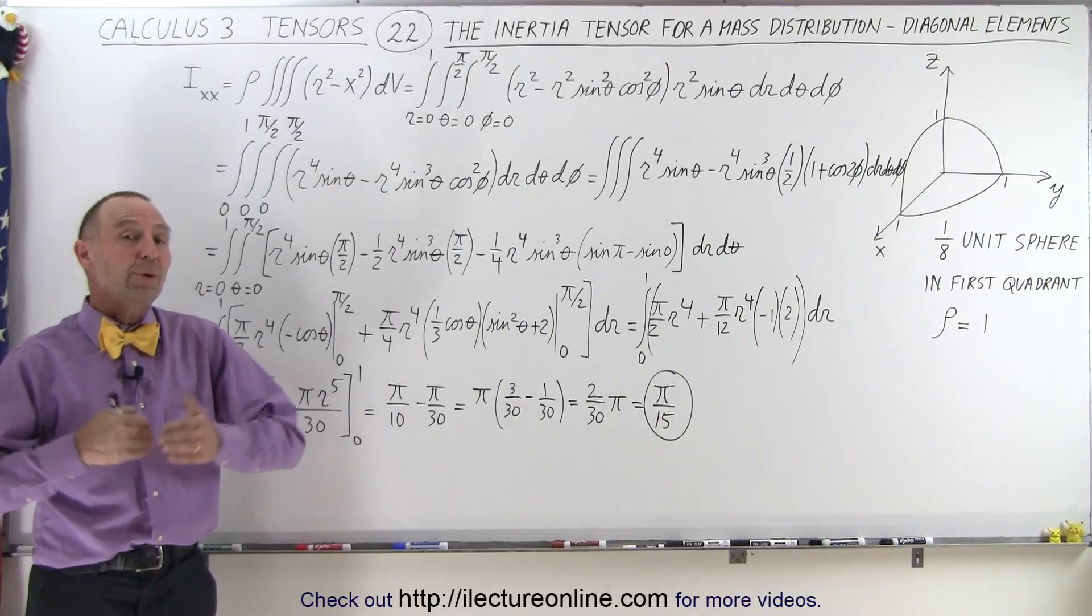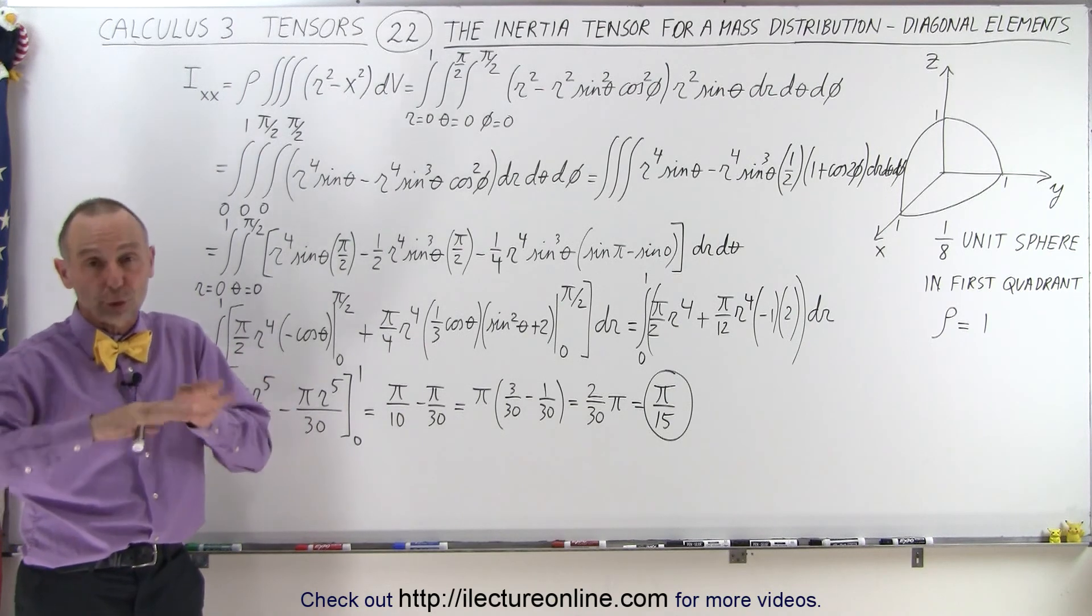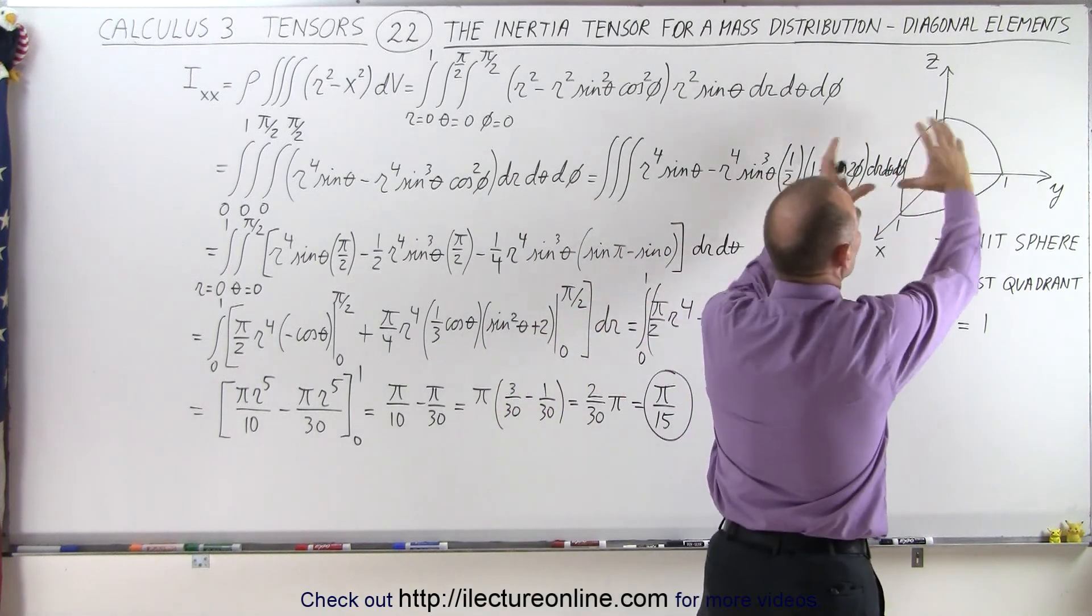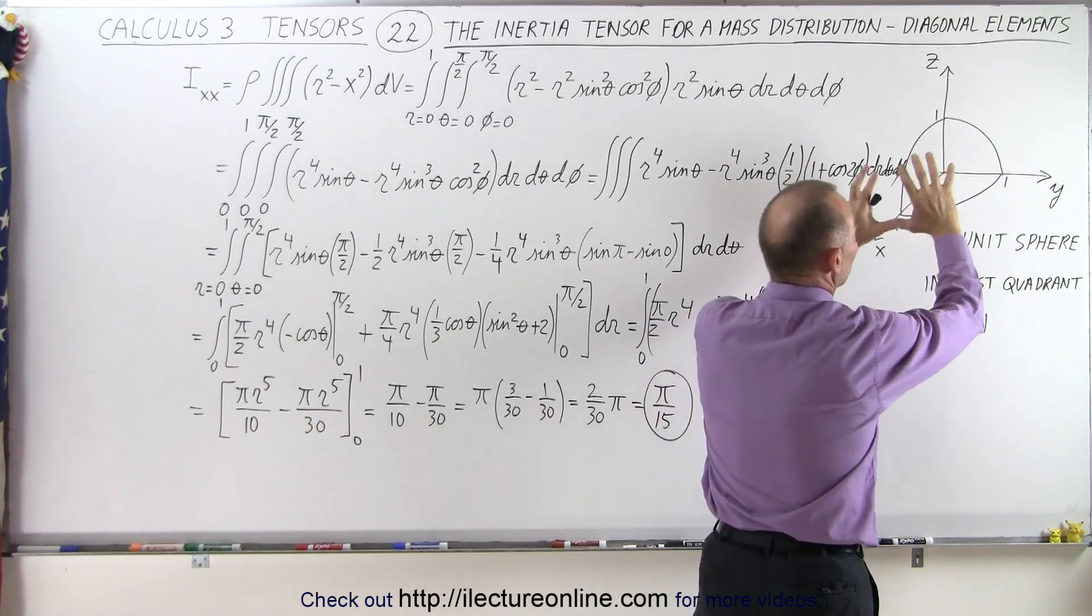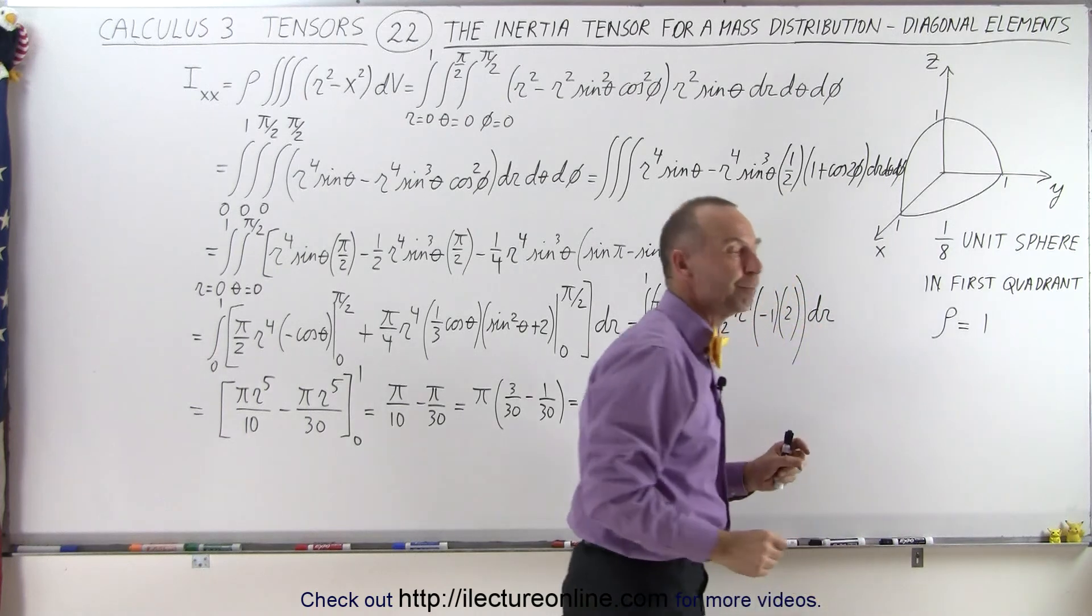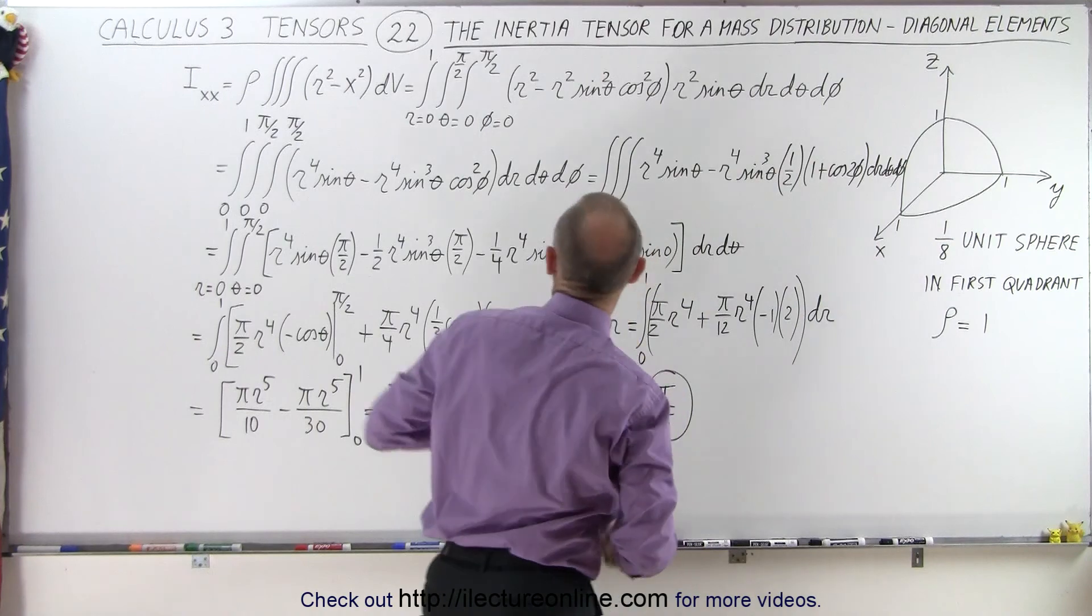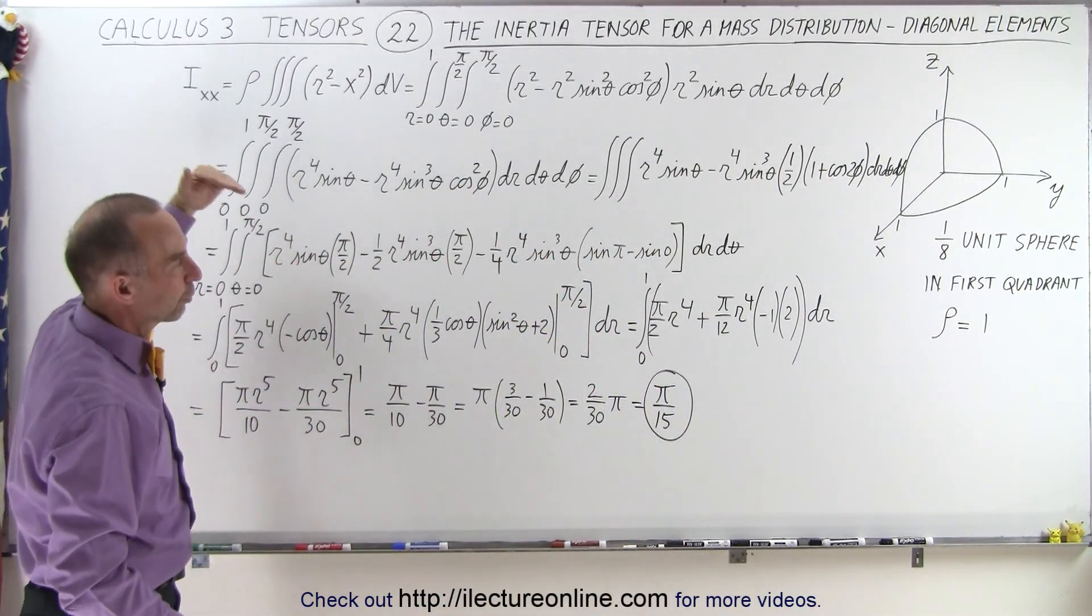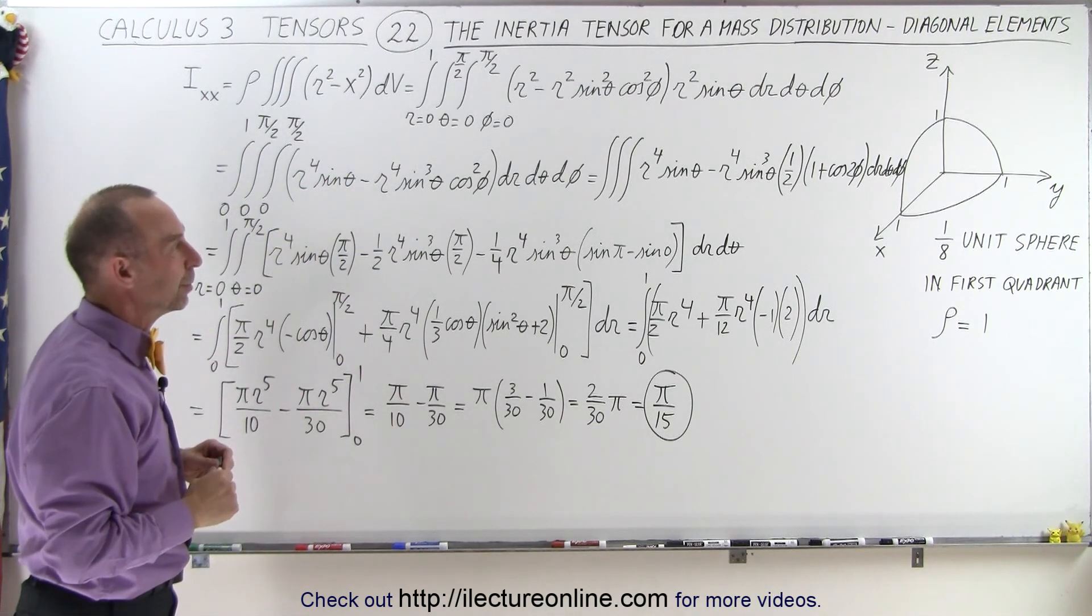Welcome to our lecture online. Now we're ready to find the moment of inertia of a volume distribution or a mass distribution. In this case we're going to take one-eighth of a unit sphere, the portion that is in the positive x, y, and z direction, so it's one-eighth of a full unit sphere. Let's say that the density is equal to 1. What is the moment of inertia about the x-axis? That's the one we're going to find when we're looking for Ixx, the upper left diagonal element.